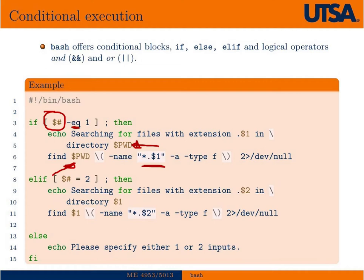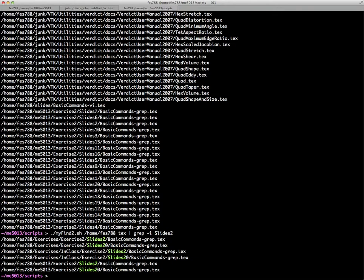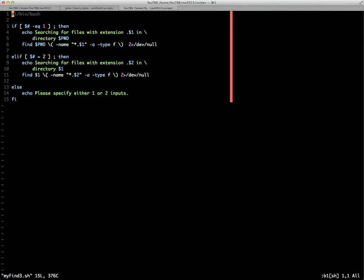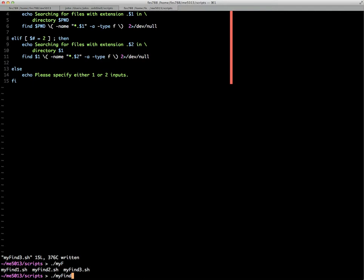However, if there's two arguments given on the command line, then the first argument will be taken as the directory and the second argument, the file extension. And then finally, if there's no arguments given, then it's going to give you basically print an error. And tell you to specify either one or two arguments. So we go over here. We can first look at it. I've already got this one written as well. My find three. Okay. There it is. And if we run it, we'll start by running it without any commands.